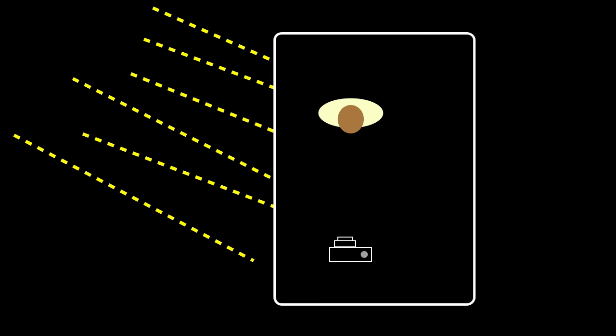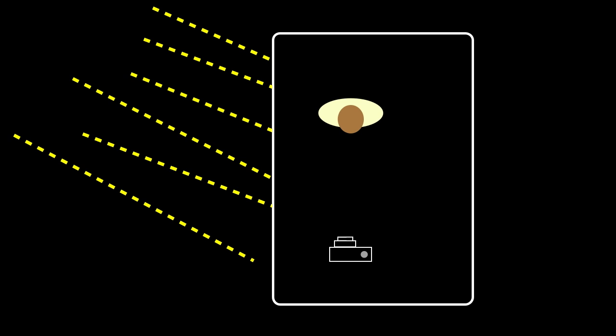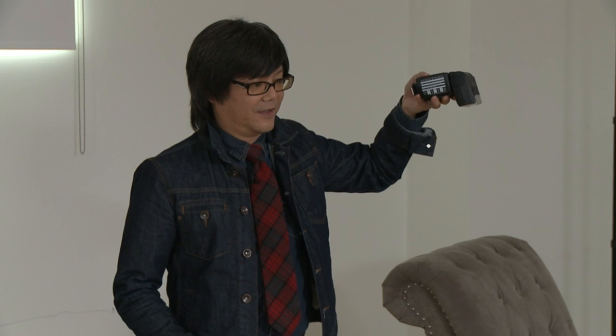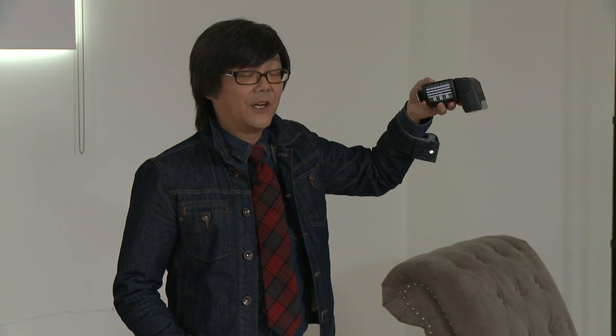If you created a black box — a situation where we're in a room and there's no light at all coming in — I took my flash and calculated the power I needed to illuminate my subject for a perfect exposure. That flash illuminates the subject for a fraction of a second. See how fast it turns off and on? That's when it illuminates your subject.